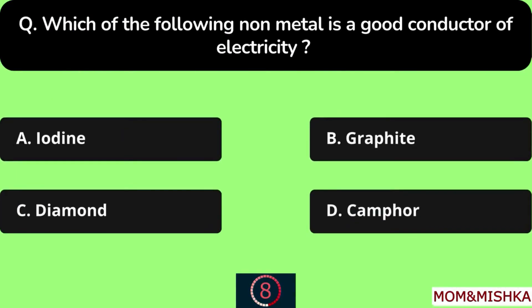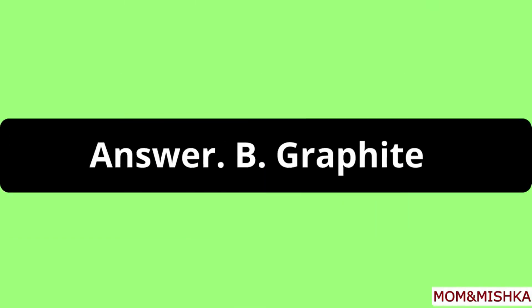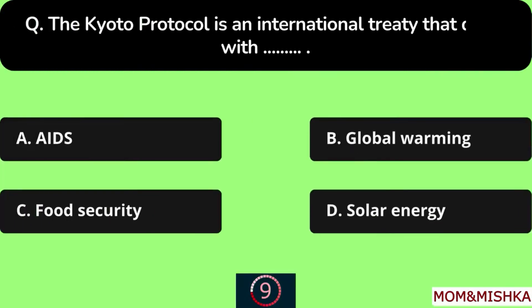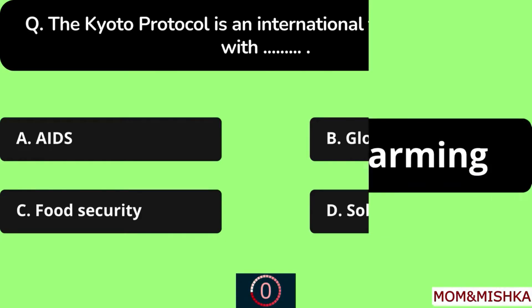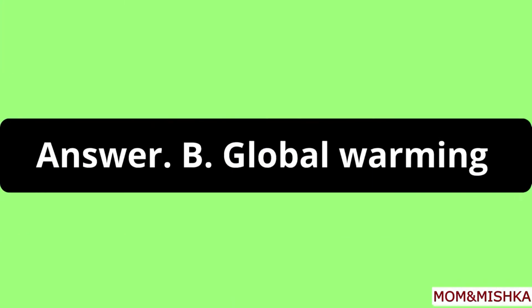Which of the following non-metal is a good conductor of electricity? Graphite, Option B. The Kyoto Protocol is an international treaty that deals with global warming, Option B.